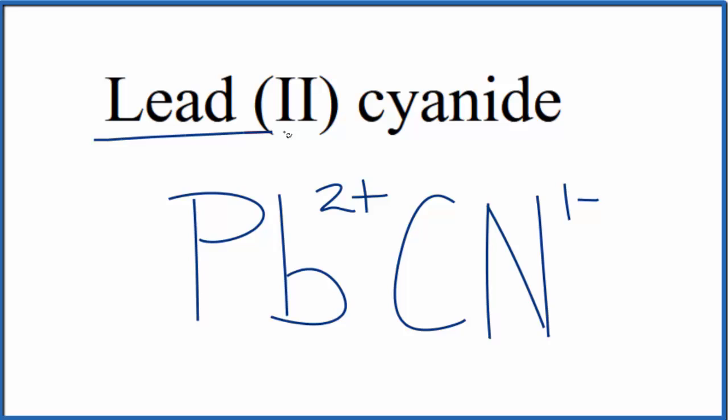Lead, that's a metal, it's a transition metal, and then cyanide, that's a group of nonmetals. So we have an ionic compound here, we need to make sure these charges add up to zero.